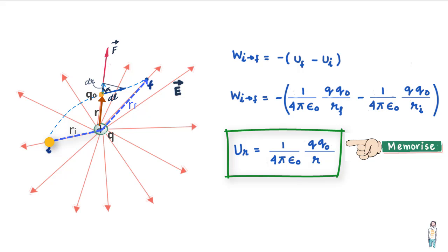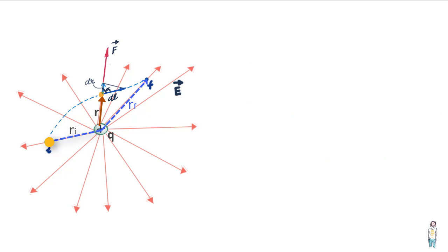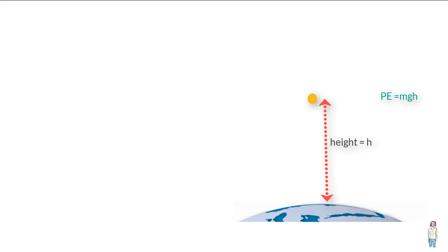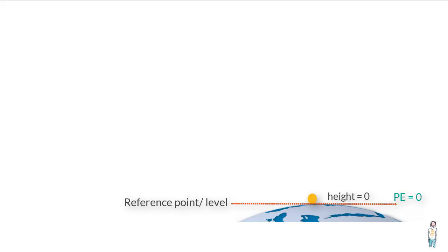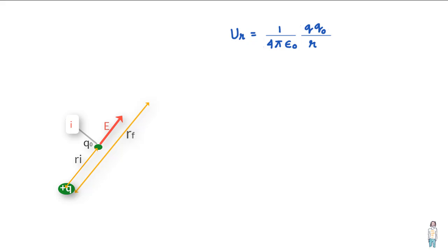You can use this equation irrespective of the signs of the charges. The potential energy will be positive when the charges have the same sign and negative when they are of opposite sign. Another important concept is that potential energy is always defined relative to a reference point where we say U equals zero. This is quite like measuring the potential energy of a ball placed above the earth at height H as mgH, where on the surface of the earth we assume H as zero and therefore the potential energy there is zero.